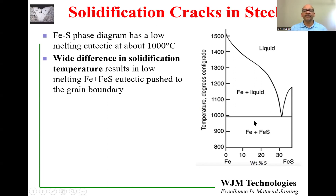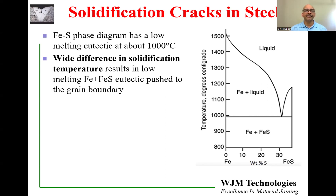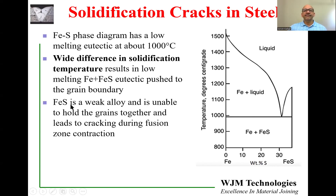As these grains start solidifying, they tend to solidify as pure as possible and push out the impurities toward the grain boundaries. So even though the overall steel might have a very small fraction of sulfur — say 0.1, 0.2, or 0.3% — as the grains solidify, the sulfur gets pushed to the grain boundaries, and the fraction of sulfur there increases very dramatically. Iron sulfide is a weak alloy. When it forms at the grain boundaries, it does not have the bonding strength to keep the iron grains together.